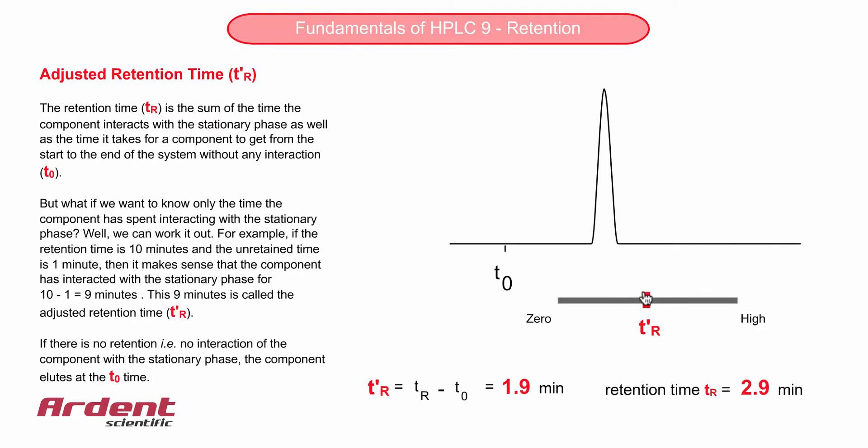But what if we want to know only the time the component has spent interacting with the stationary phase? Well, we can work it out. For example, if the retention time is 10 minutes and the unretained time is 1 minute, then it makes sense that the component has interacted with the stationary phase for 9 minutes, simply 10 minus 1. This 9 minutes is called the adjusted retention time and is known as TR prime.